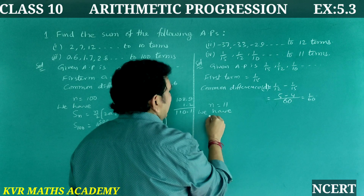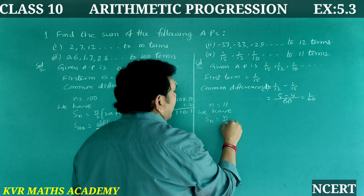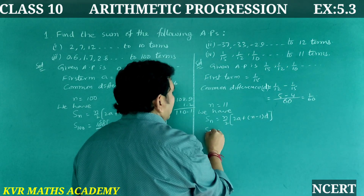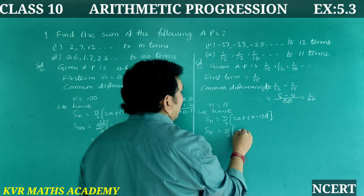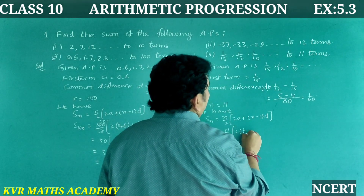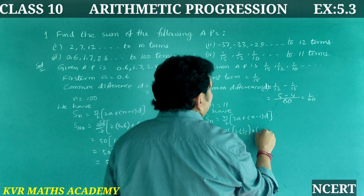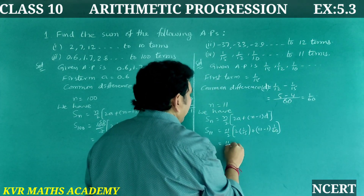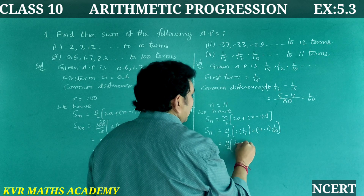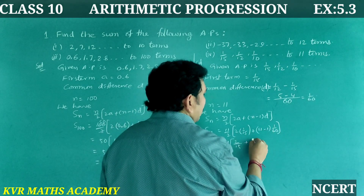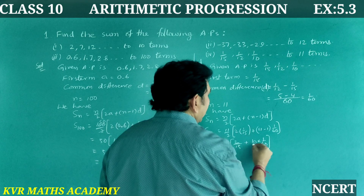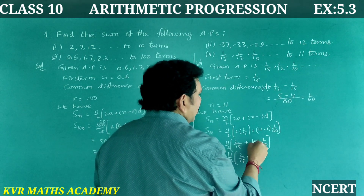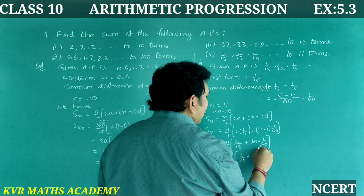Sₙ = n/2 × [2a + (n−1)d]. S₁₁ = 11/2 × [2×(1/15) + (11−1)×(1/60)] = 11/2 × [2/15 + 10/60] = 11/2 × [2/15 + 1/6].